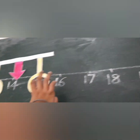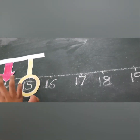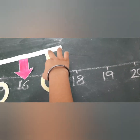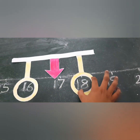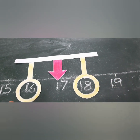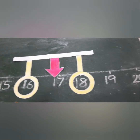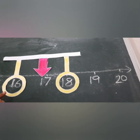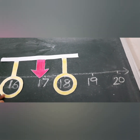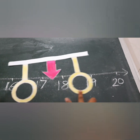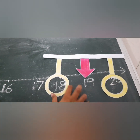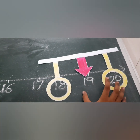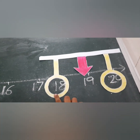What comes between 16 and 18? 17 — very good. What comes between 18 and 20? 19 — very good. Excellent!